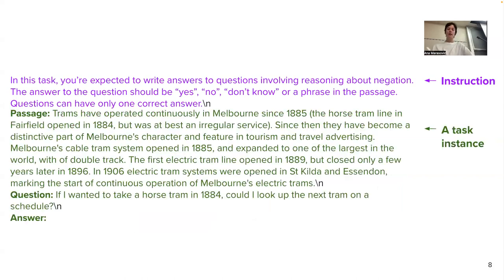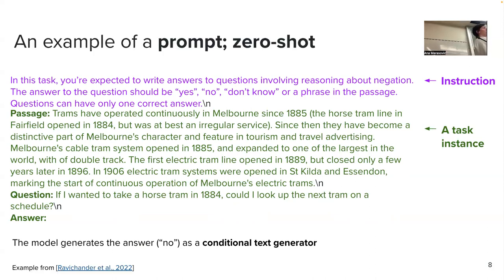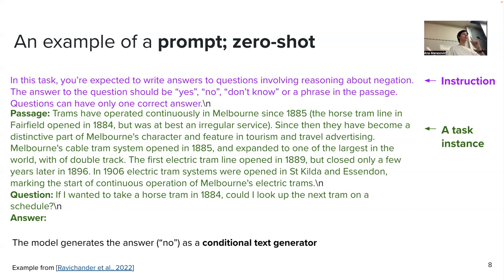Going over the example: this is an example of a prompt. The definition of a prompt isn't a single definition — I'm giving you one that people commonly use, but you will see variations. You have an instruction and an evaluation instance — that's a prompt. Even if you didn't have an instruction and just suggested to the model what to do, that would also be a prompt. We call this zero-shot prompting, and we call it zero-shot because no training examples were used here. Zero training examples — zero shot — because shot is another term used for training examples.